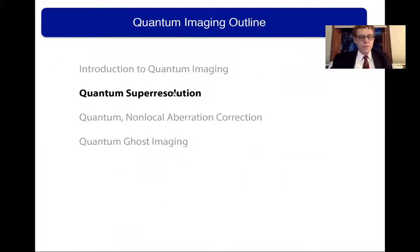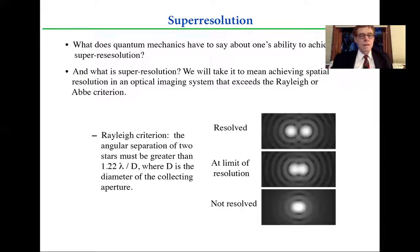Now with that very brief introduction, let's move on to what we mean by quantum super resolution. So a question I ask is, what does quantum mechanics have to say about our ability to achieve super resolution? Well, I guess the first question is, what do we mean by super resolution? We will take it to mean achieving spatial resolution in an imaging system that exceeds the Rayleigh or the Abbe criterion.